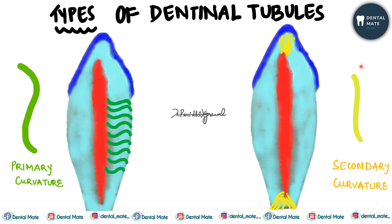The primary curvature has basically a sigmoid course — doubly curved, with a convex course. It starts from the pulpal surface at 90 degrees, and its first convexity is towards the tooth apex. It ends at the DEJ or dentino-cemental junction DCJ at 90 degrees. It starts from the pulp at an angle of 90 degrees and at DCJ or DEJ at 90 degrees, with the first convexity towards the root apex.